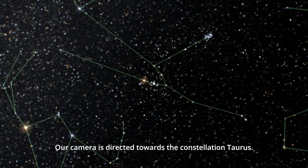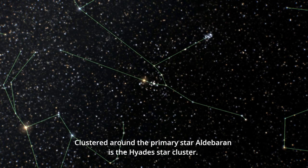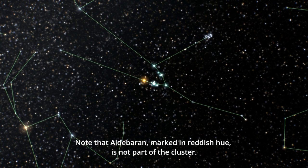Our camera is directed towards the constellation Taurus. Clustered around the primary star Aldebaran is the Hyades star cluster. Note that Aldebaran, marked in reddish hue, is not part of the cluster.